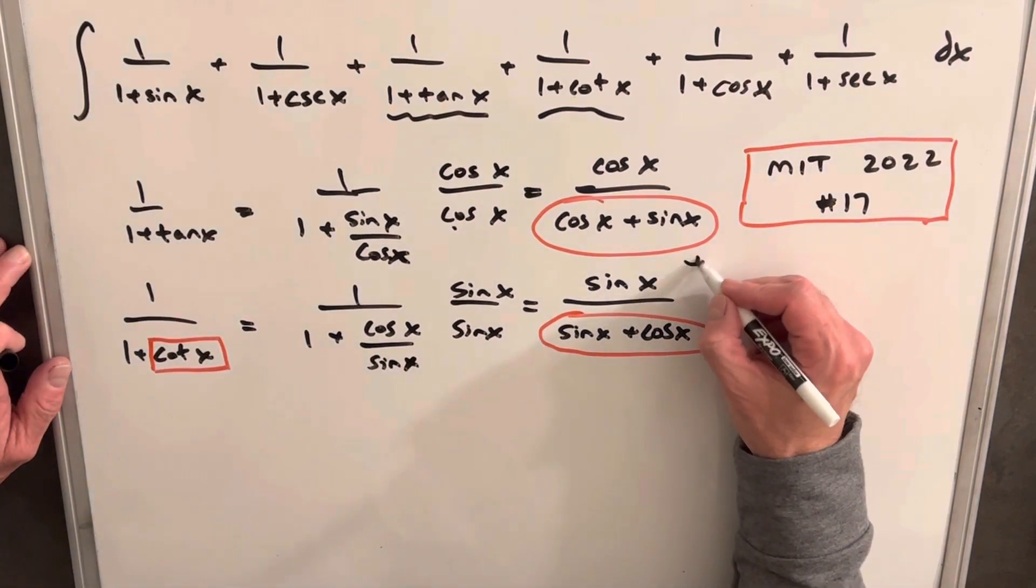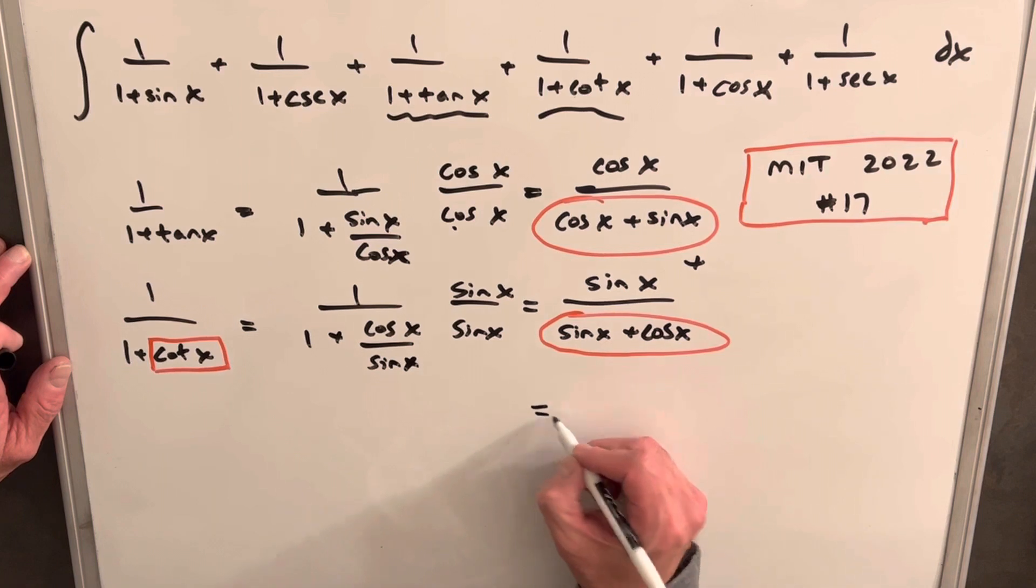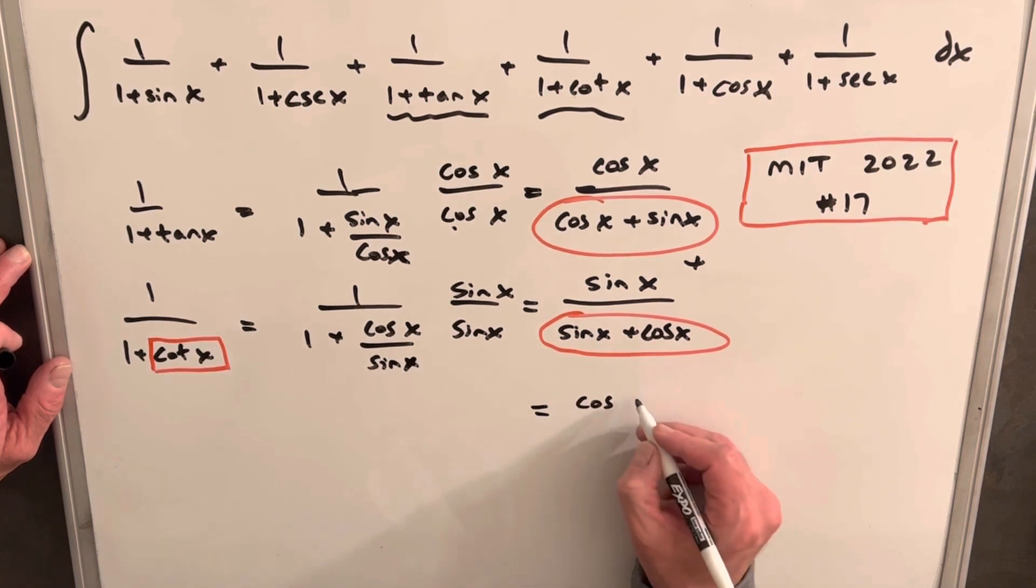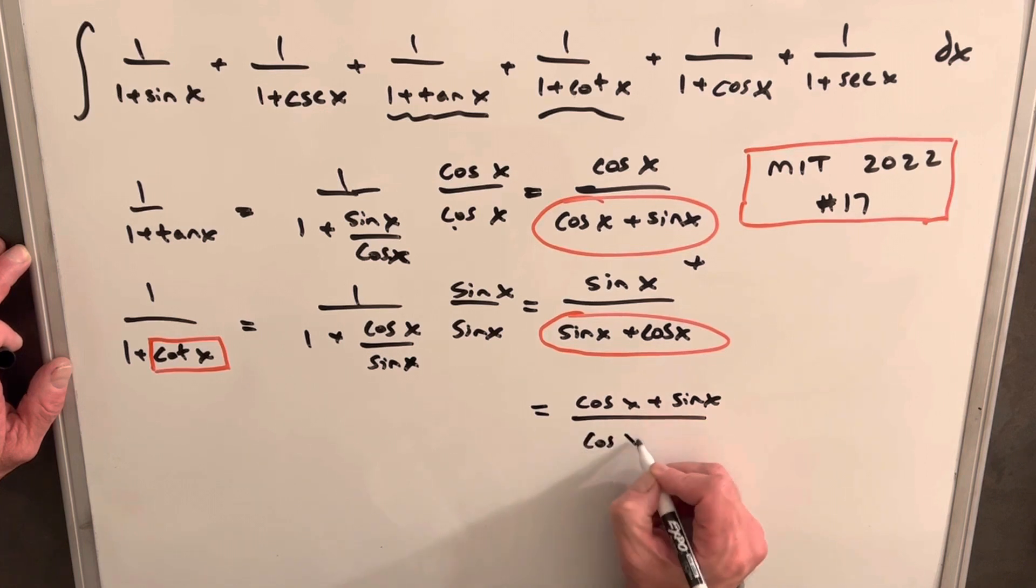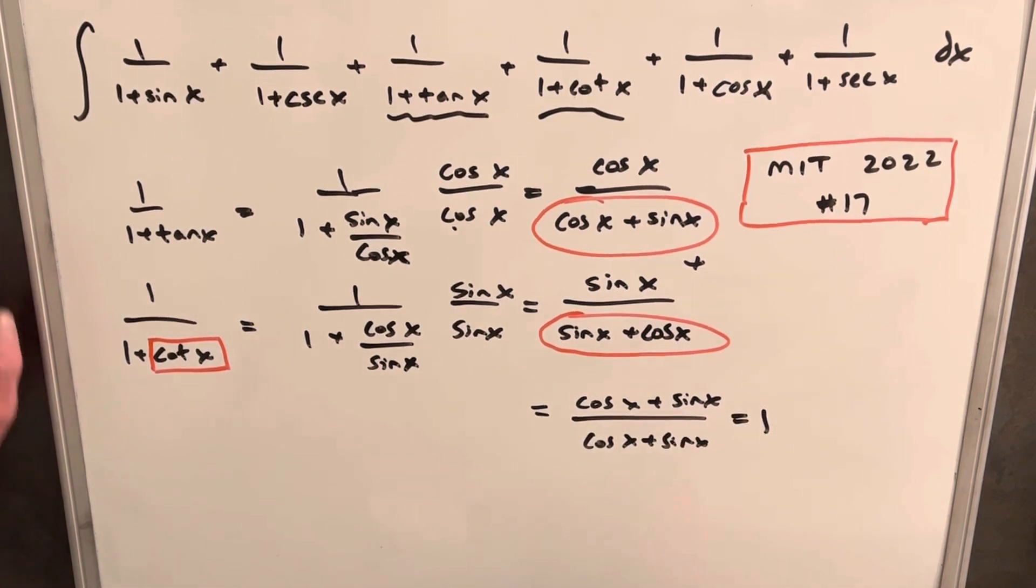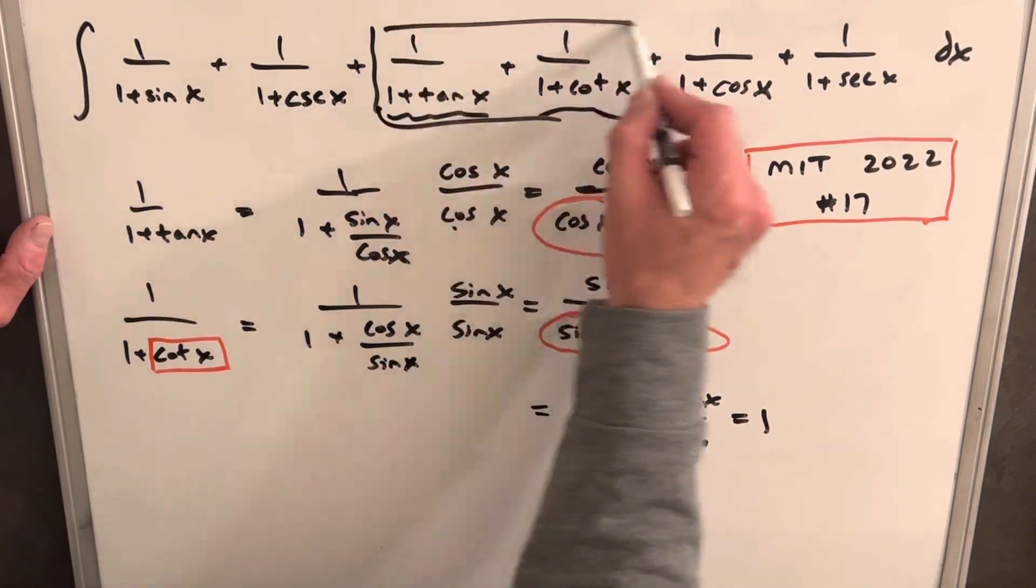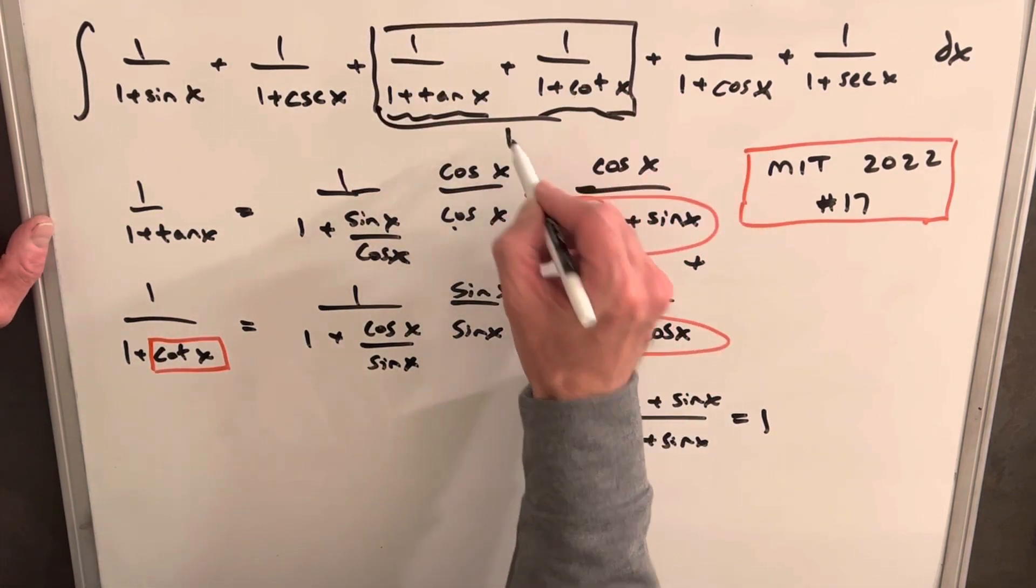So if we just add these two terms together, we're going to end up with, for the sum of these, we're going to have cosine x plus sine x over cosine x plus sine x. And that's just equal to 1. So then that tells us that these two terms here are just going to give us a 1.